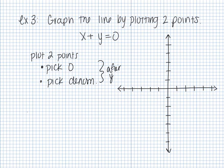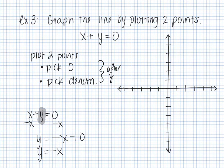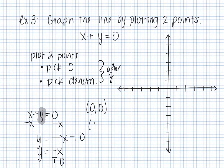So I take x plus y equals zero and solve for y. I subtract x from both sides — negative x plus zero is just negative x — so y equals negative x. My first point: pick x equals zero, so y equals negative zero, which gives me zero. Point is (0, 0). For the second point, the denominator is 1 since it's over one, so I pick x equals 1. Plugging in 1 gives me negative 1, so my second point is (1, negative 1).